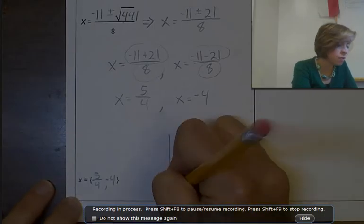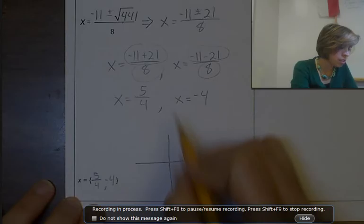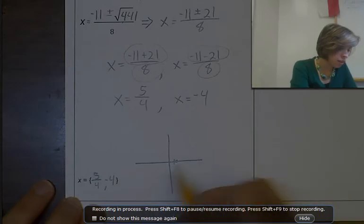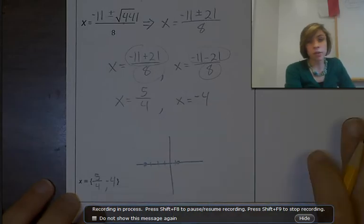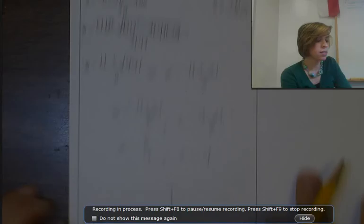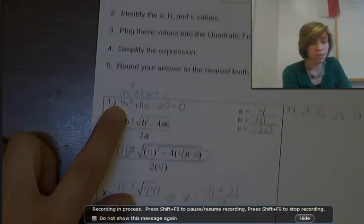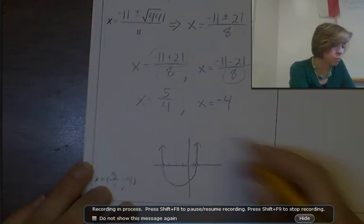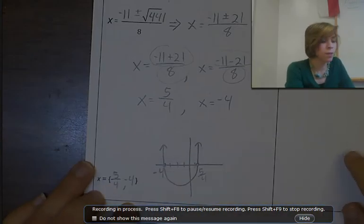On a graph it would look like this — just a rough sketch. 5 fourths is a little bit more than 1, and negative 4 is over here. I know this is going to be a U-shape — a smiley face — because the x squared term is positive. If it were negative, it would be an upside-down U. So it crosses the x-axis at 5 fourths and negative 4.